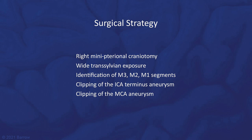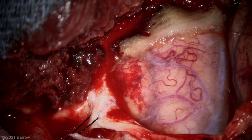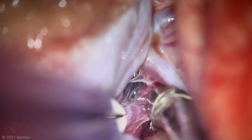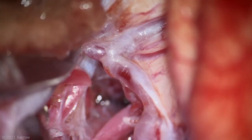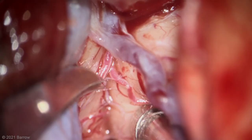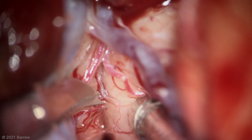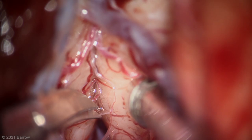Here is the exposure through a mini-pterional craniotomy. The temporal lobe is to your left and the frontal lobe is to your right, with the sylvian fissure right in between. The sylvian fissure was widely split, preserving these little veins crossing the fissure. By following the M3 and M2 vessels downward, the arteries naturally show the way into these arachnoidal planes. You can see the use of sharp dissection here to separate the frontal and temporal lobes.